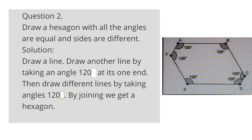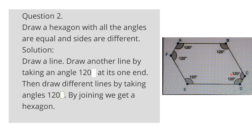Question 2: Draw a hexagon with all angles equal but sides are different. The angles are equal, so each angle is 120 degrees, since the sum of interior angles of a hexagon is 720 degrees. The sides are different lengths, giving a rough figure.